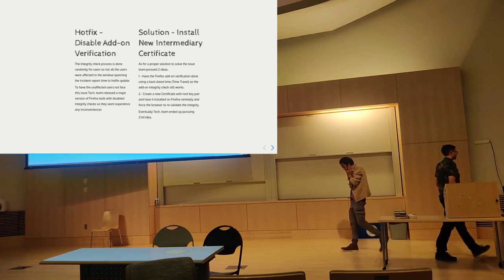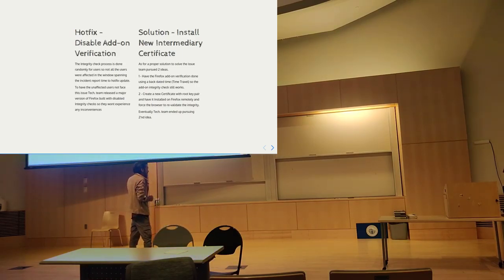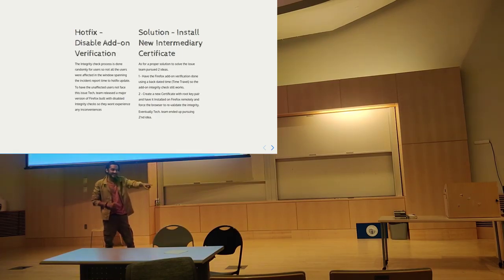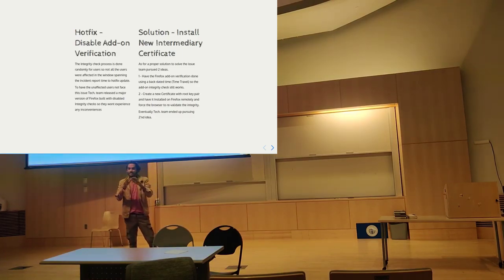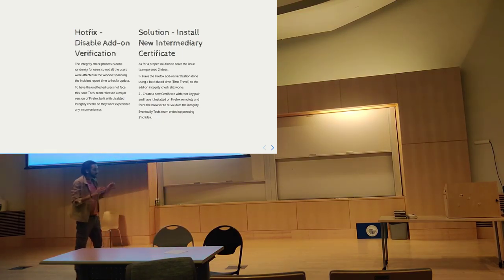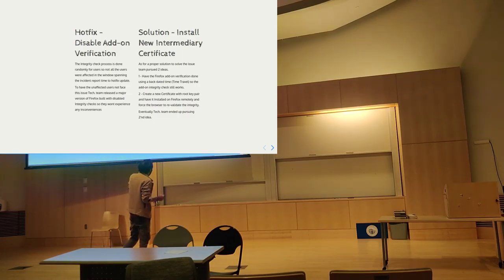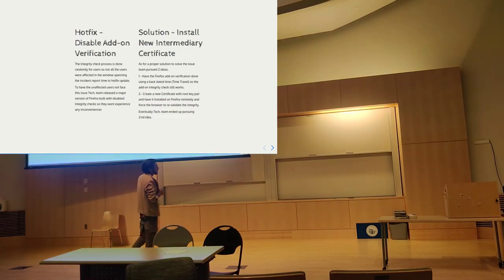So, starting with Mozilla: the intermediary certificate messed up and got expired. It took them about 12 hours to fix it. They had two options. One was a hotfix — changing your system time back to before the expiry, like setting it to May 1st, so the certificate still appeared valid. The actual solution was creating a new certificate valid for a couple more years. But even after the fix, users who had disabled automatic updates wouldn't get those changes.